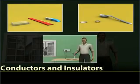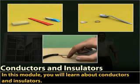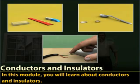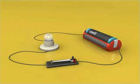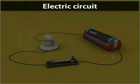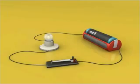Conductors and insulators. In this module, you will learn about conductors and insulators. What we see here is a simple electric circuit which consists of a cell, a key, connecting wires, and a bulb.